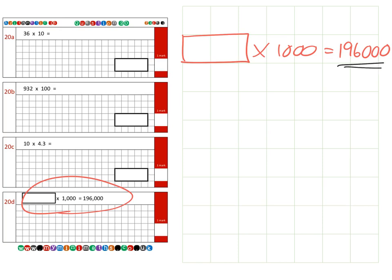We know that we have multiplied by a thousand, which is three lots of times by 10.